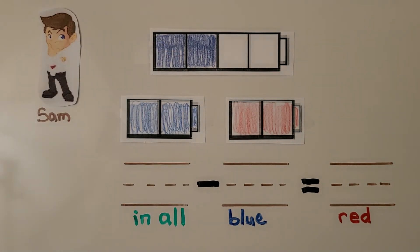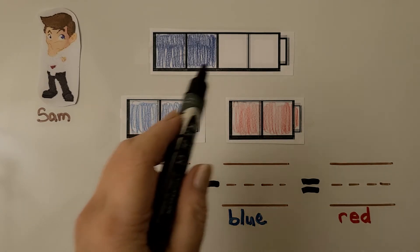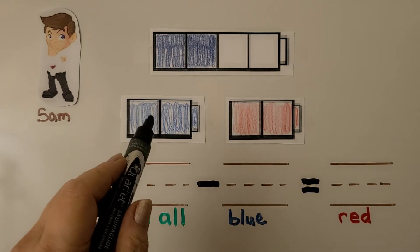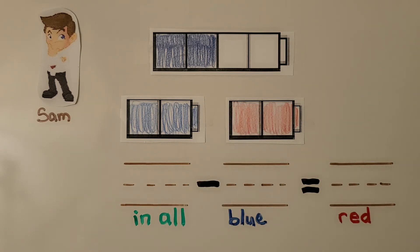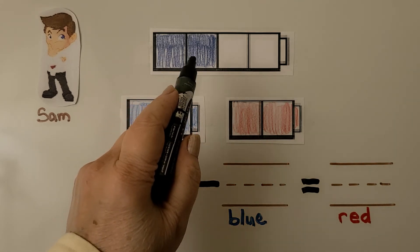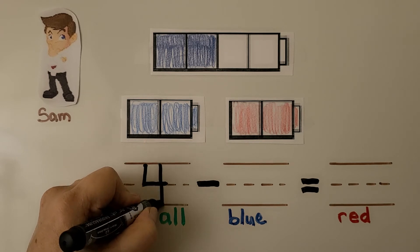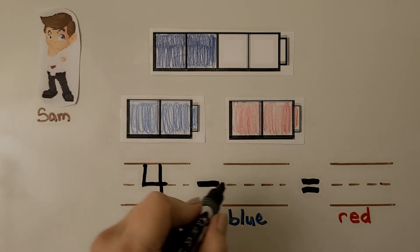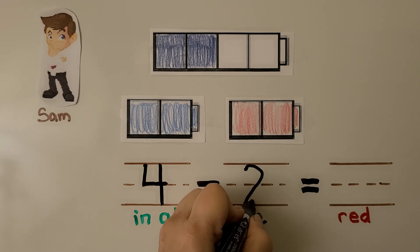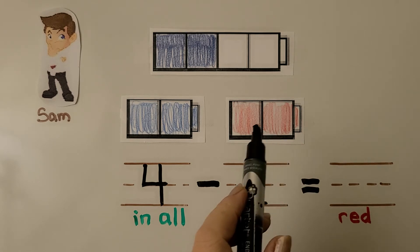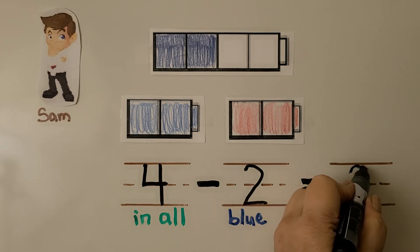We take apart the cube train to separate the blue cubes from the red cubes. We have four cubes in all. We take away the two blue ones, and the red cubes will be left over. We can write a subtraction equation: one, two, three, four in all. We take away the two blue ones — one, two. And we can see how many are red — one, two. We can write the two for the two red ones.